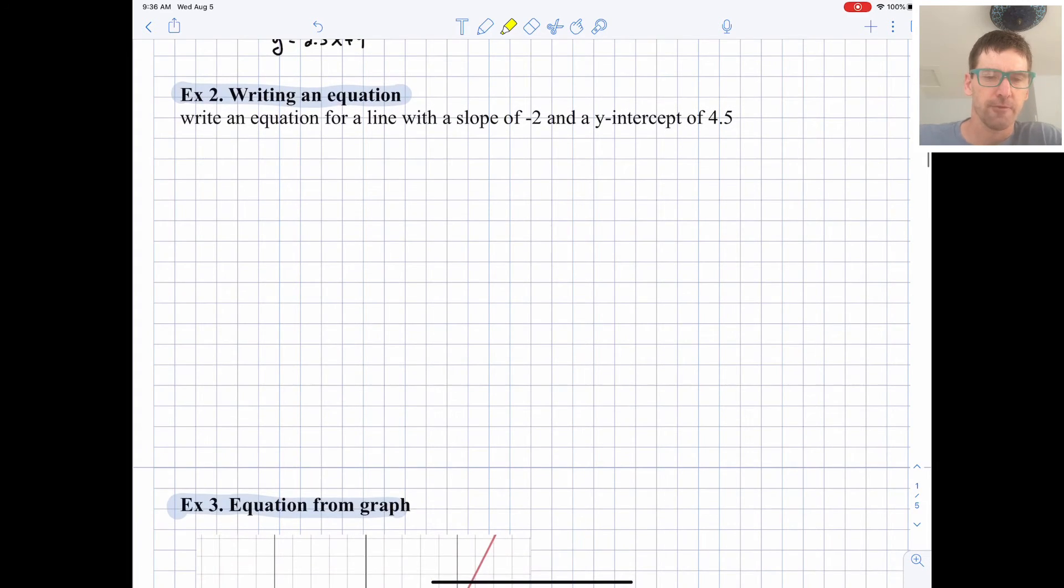Let's write an equation for a line with a slope of negative 2 and a y intercept of 4.5. This is a pretty easy just plug the numbers in type problem. We're going to plug the slope in there and the y intercept in for b. So y equals negative 2x plus 4.5, easy peasy.